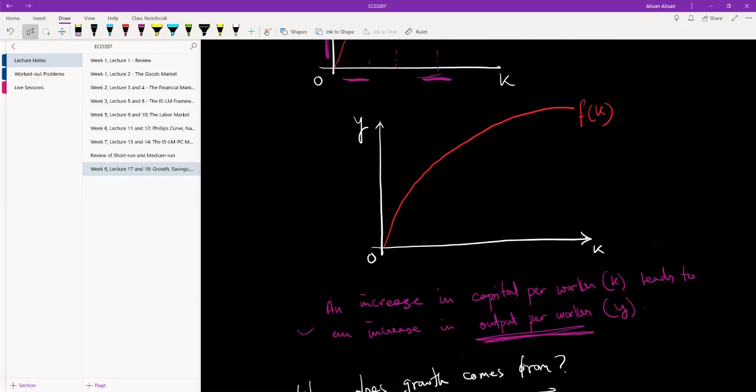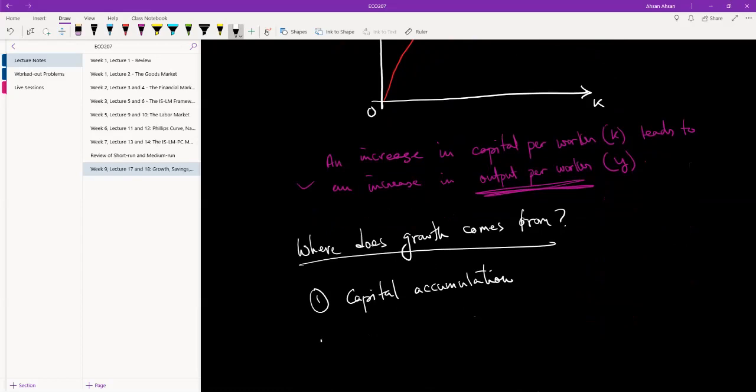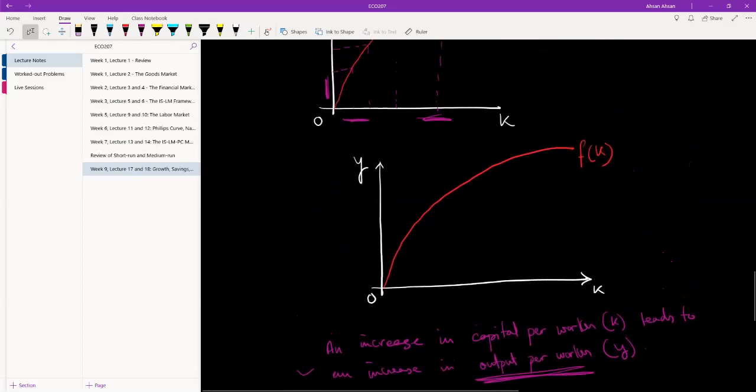Which is growth, effectively. And the second place where we can get growth from is technological progress. Now what does that mean? What is technological progress? That's pretty straightforward.